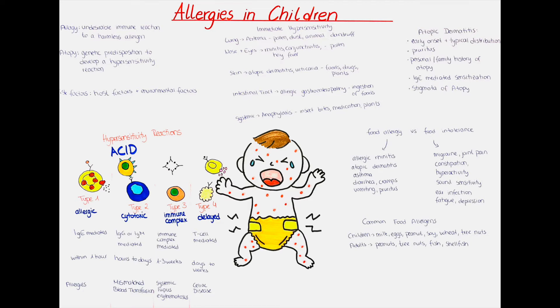A way to remember the four types is the acronym ACID. Type 1 is allergic, type 2 is cytotoxic, type 3 is immune complex and type 4 is delayed.